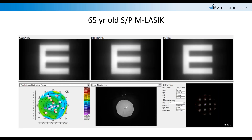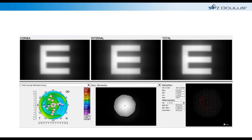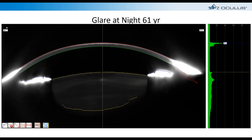Looking at this same patient's Visual Performance Display, there isn't much going on in retroillumination and the internal aberrations look pretty good, but the corneal aberrations from the original LASIK surgery are probably part of the cause of their visual problems. For a patient like this, you would not want to promise dramatic improvement with lens replacement alone — you might need to plan two procedures: one to address the cornea and one to remove the lens.